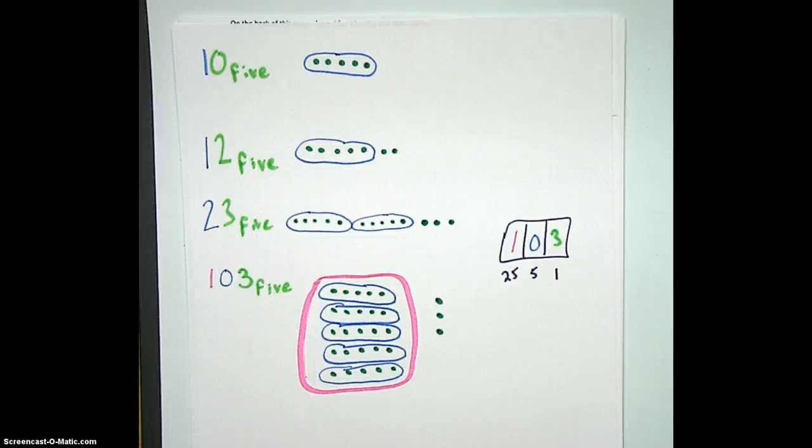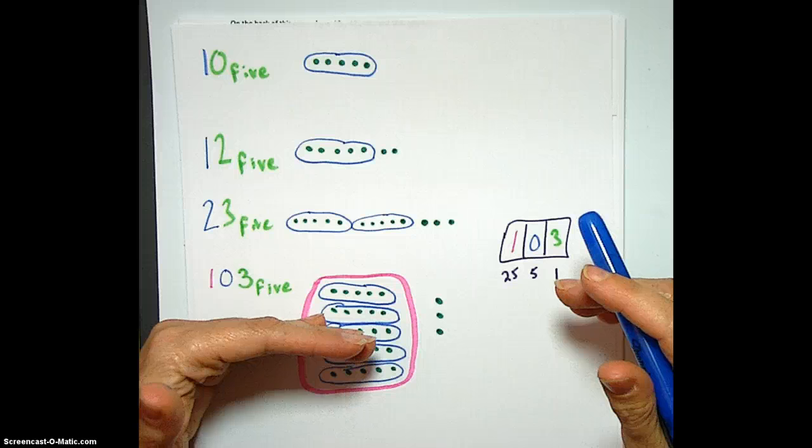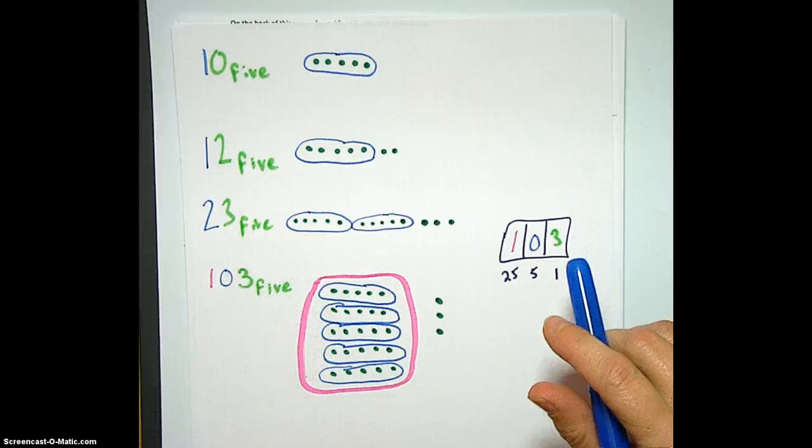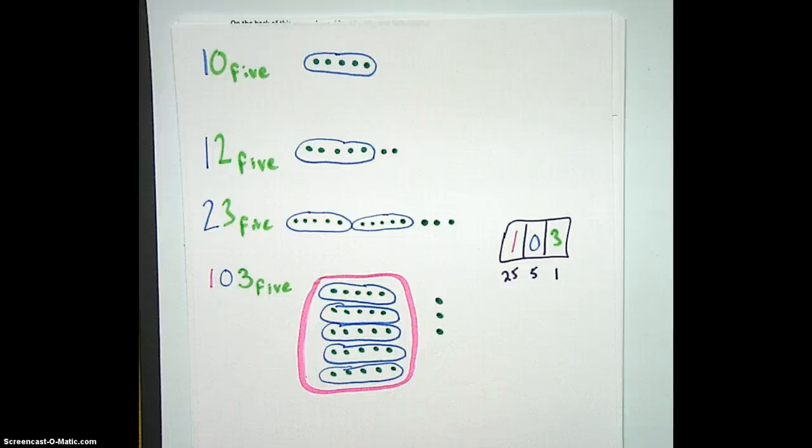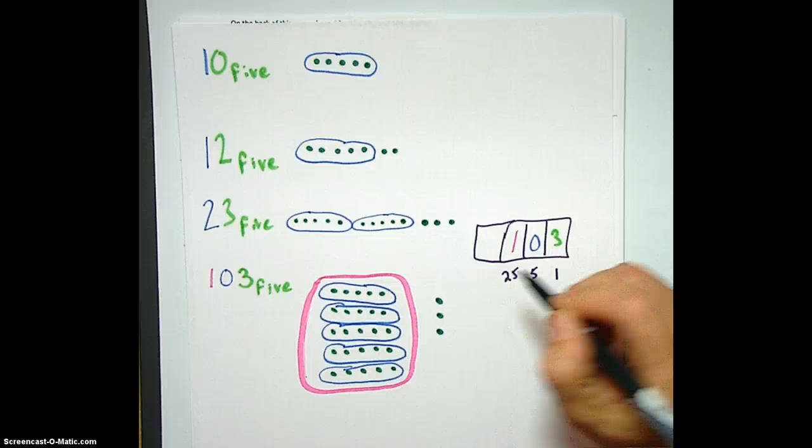So can you remind me one more time why we don't say 103 base 5? Because it's not 103 because 100 is a number that exists in base 10 because it means 100. And 100 is 10 groups of 10. And here we have 5 groups of 5. So whatever base it is, is the way that you group things. In base 10, you group 10 ones and then 10 tens and then 10 hundreds. And that's how your place values go up in base 10. So in base 5, you group 5 ones, 5 fives, 5 twenty-fives.